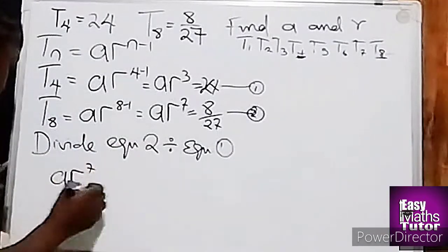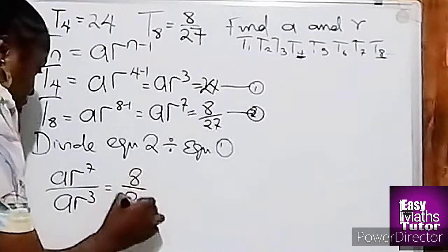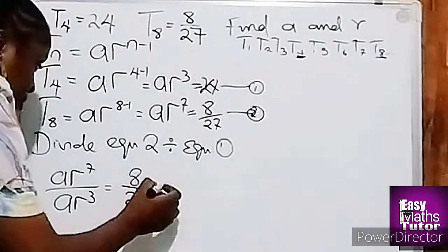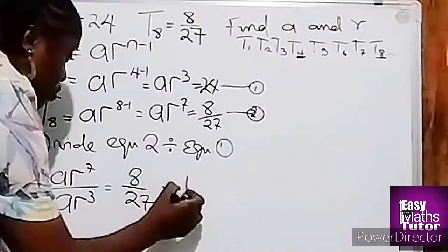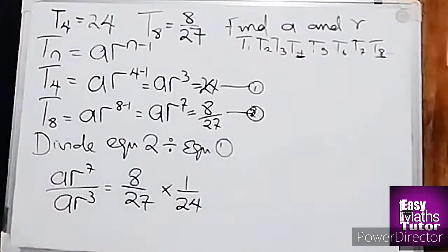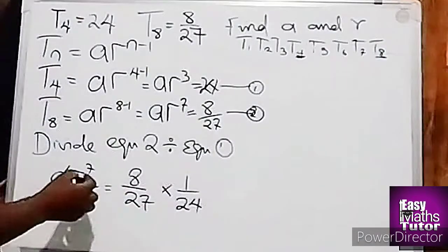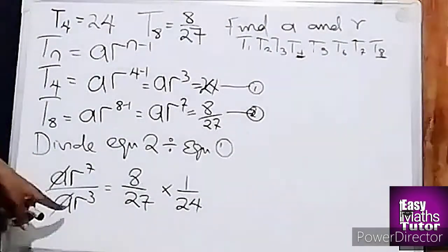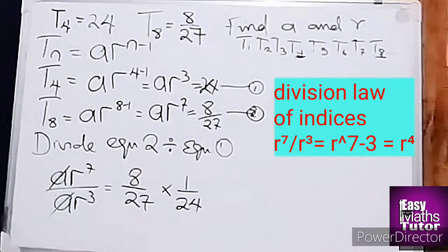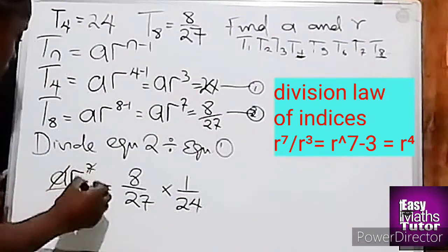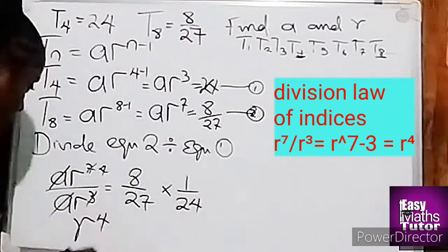So we'll say ar⁷ all over ar³ is equal to 8 over 27 divided by 24. But we can't put divide, so we'll multiply. So we'll invert it to 8 over 24. So this a will cancel out. Then applying the laws of indices, when the same base divides each other, means we can subtract the powers. So 7 minus 3 will give us 4, leaving us with r⁴ equal to...